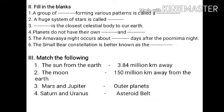Next: planets do not have their own — and — . The answers are heat and light. Next: the Amavasya night occurs about — days after the Purnima night. The answer is fifteen days. Next: small bear constellation is better known as the — . The answer is Saptarishi.